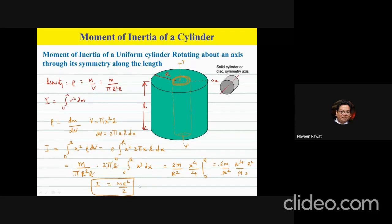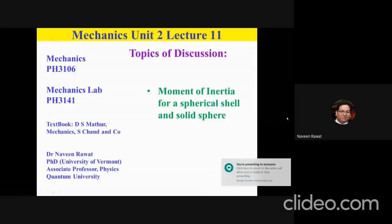We found the expression I = mr²/2, which is interesting because it doesn't depend on the length of the cylinder. The length of the cylinder doesn't come into the picture when you rotate the object about this axis.